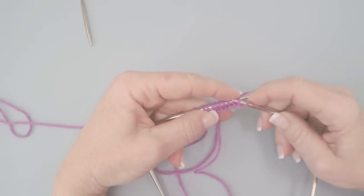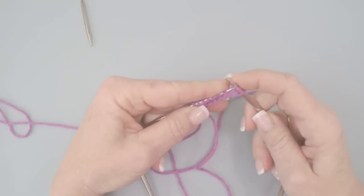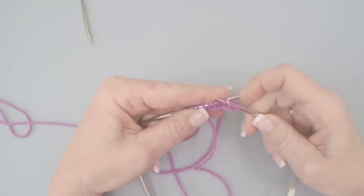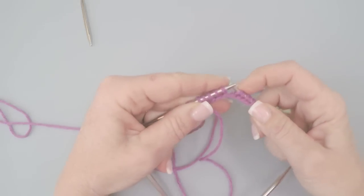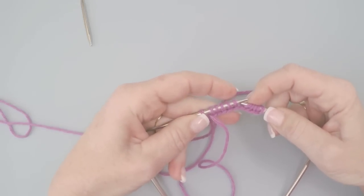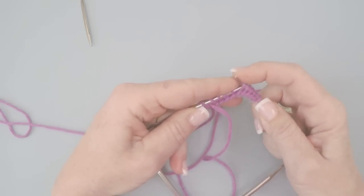I'm going to grab a second needle and I'm going to slip half the stitches plus one onto this needle. So 1, 2, 3, 4, 5 and then our extra stitch is the sixth one.